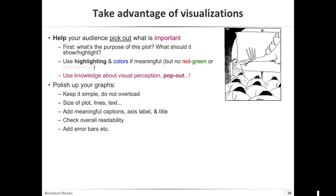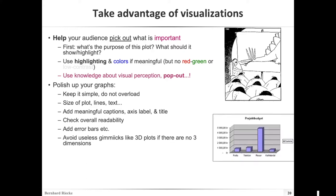If it's quantitative, pretty much put an error bar in there, but also explain what it actually shows — for example, is it a confidence interval? Avoid all kinds of 3D gimmicky things — here for example you cannot even read off how much it is. Unless you have real 3D data, it's really hard to understand a 3D plot on a 2D screen. Pretty much don't do that.